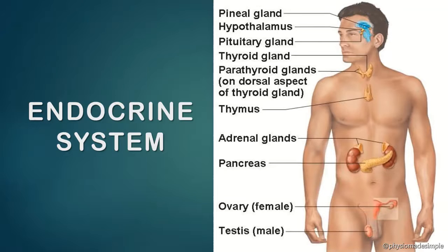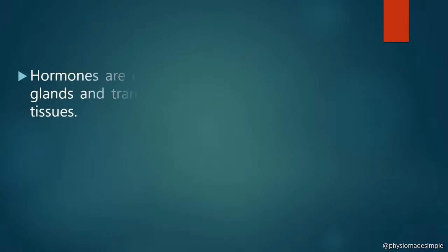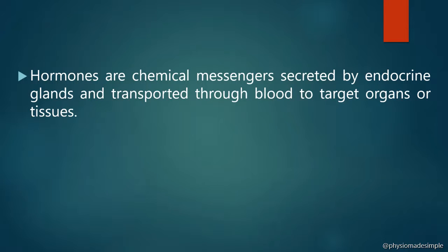These glands produce hormones. Hormones are chemical messengers secreted by the endocrine glands and transported through the blood to target organs or tissues. They carry information from the endocrine glands to the target cells — that is their mechanism of action.